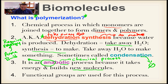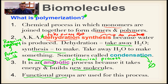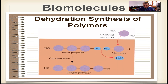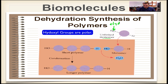Remember functional groups from an earlier screencast — things we add to a hydrocarbon to give a carbon special properties. These functional groups are used in this process. Here we have an imaginary monomer with an -OH group attached to it, and that is called a hydroxyl group.